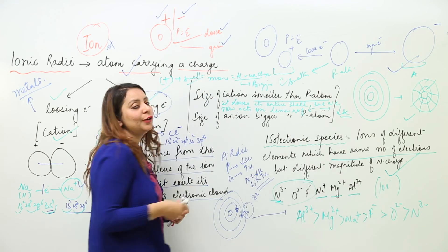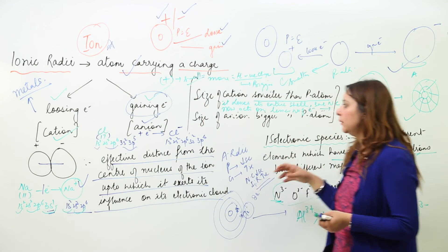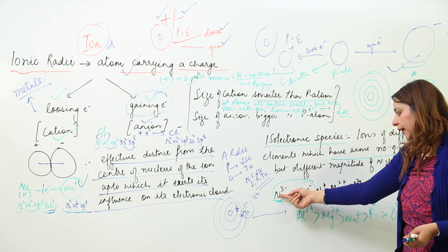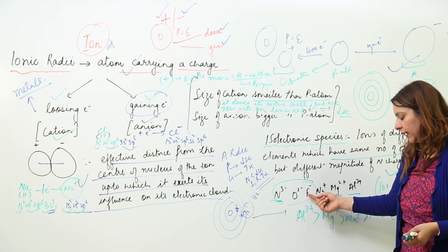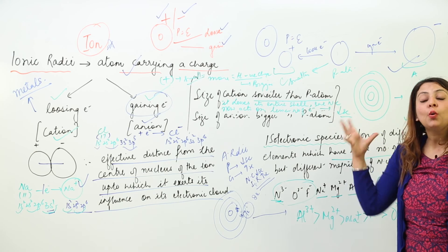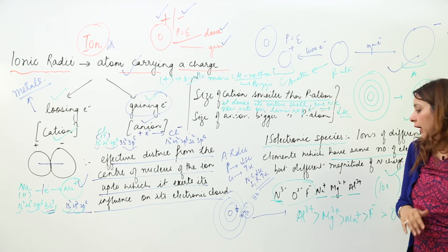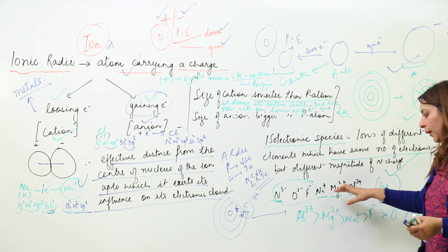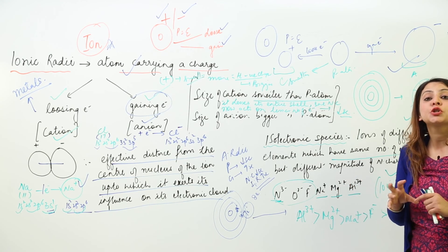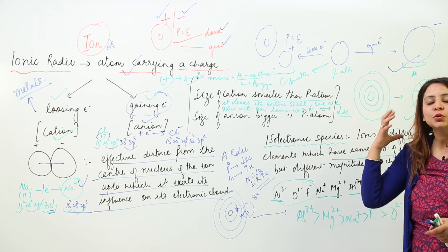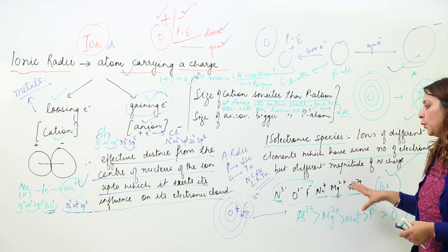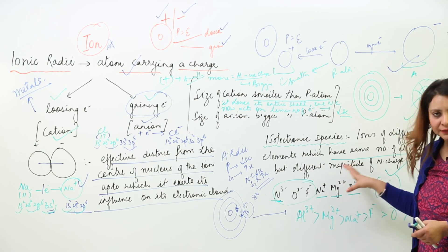So this is how you arrange isoelectronic species by taking into consideration the magnitude of the charge. More negative charge means the ion is quite large, as anions are always bigger. More positive charge means the ion is much smaller. You can arrange isoelectronic species depending on these factors.